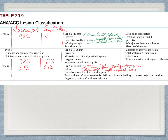Keywords for Type A: simple lesions — lesion length less than 10 millimeters, less than 45-degree angle, discrete, smooth, concentric, low calcium burden, not totally occluded, no ostial involvement, no side branch involved. Type C would be length more than 20 millimeters, diffuse, tortuous, and a chronic total occlusion — defined as three or more months old — total occlusion, degenerated vein graft with friable lesions.